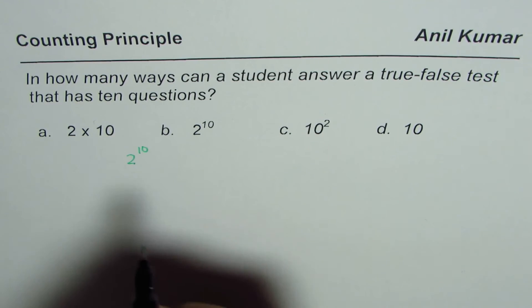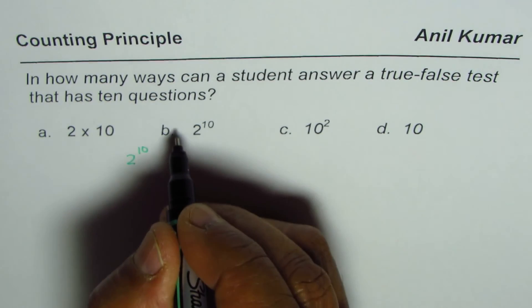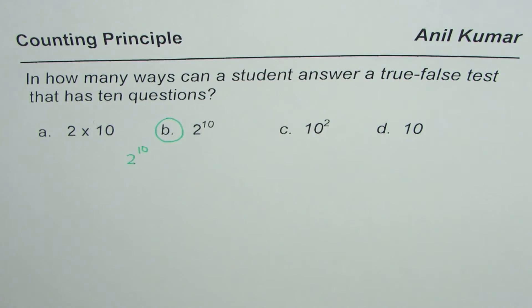to the power of ten - two times two times two times two. So that is the correct option. The option is 2^10. Thank you.